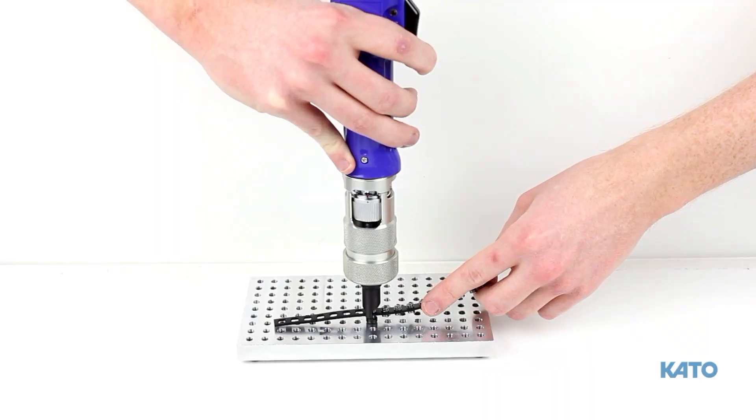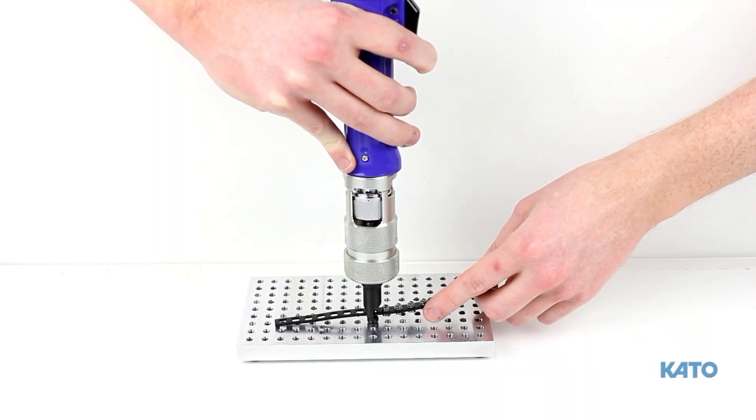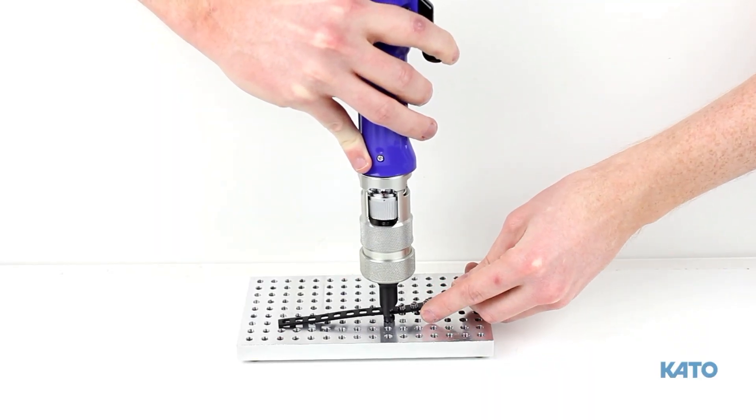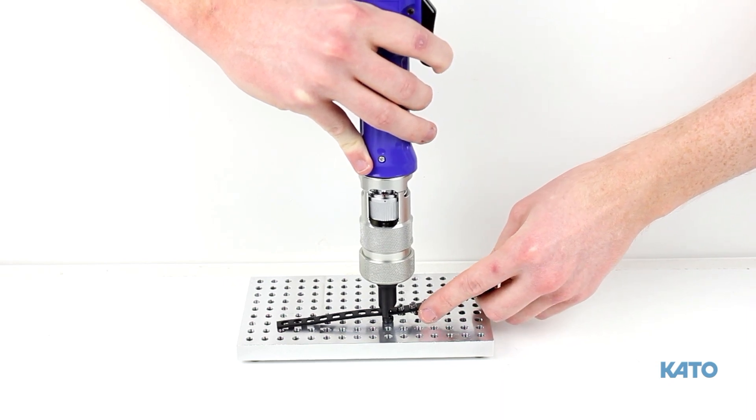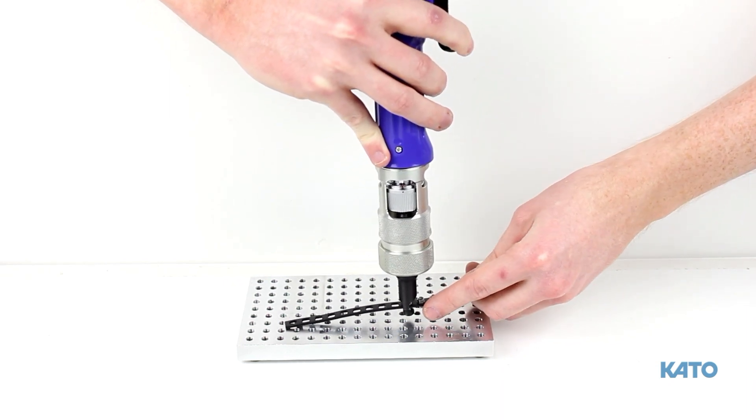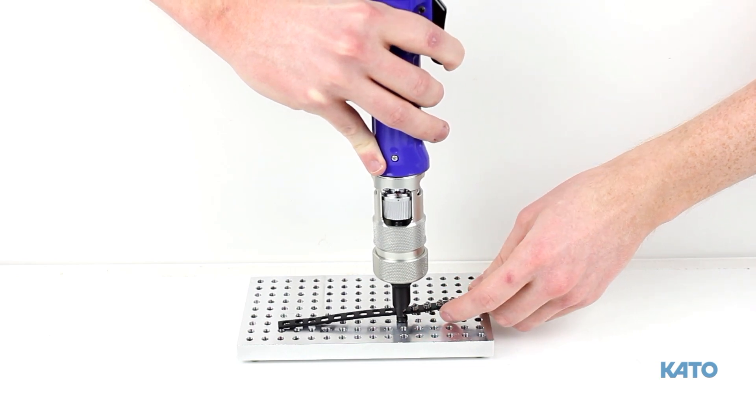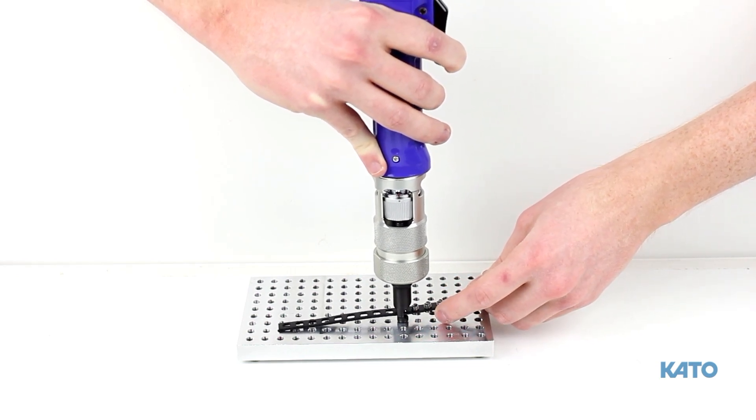As you can see, using the Kato prewinder electric tool is very fast and will greatly increase productivity. In fact, the Kato prewinder electric tool is the fastest semi-automatic installation system for helically coiled screw thread inserts.